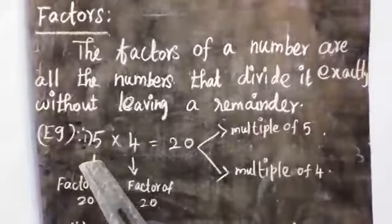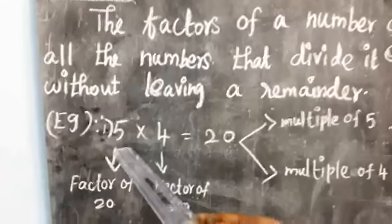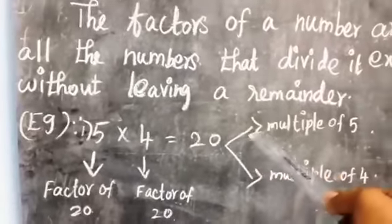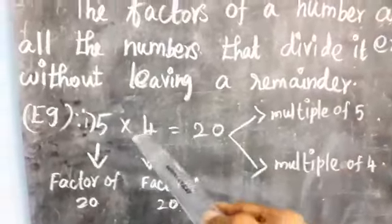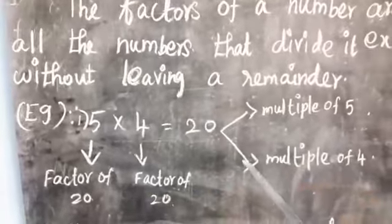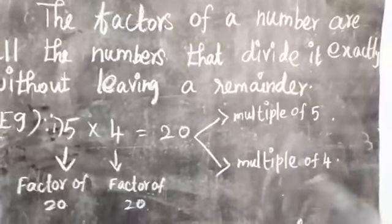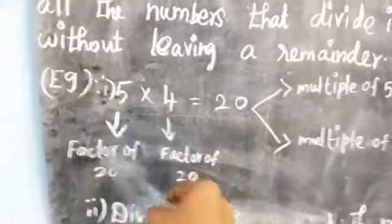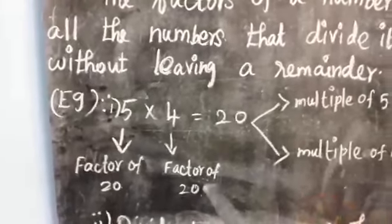Now look at the example. 5 into 4 — 5 fours are 20. Here 5 and 4 equal 20. 20 is the multiple of 5 and multiple of 4. 5 fours are 20, and 4 fives are also 20. So 5 is a factor of 20, and 4 is a factor of 20.